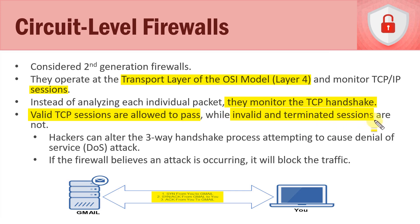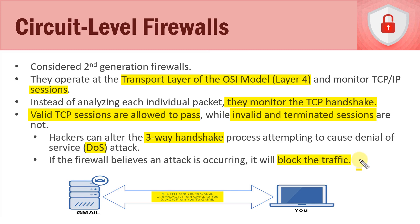Valid TCP sessions are allowed to pass, while invalid and terminated sessions are not. This is important because hackers can alter the three-way handshake in an attempt to cause a denial-of-service (DoS) attack. If the firewall believes an attack is occurring, it will block the traffic. So the circuit level firewall — our second generation type — operates at layer 4 of the OSI model, the transport layer, and monitors TCP sessions.